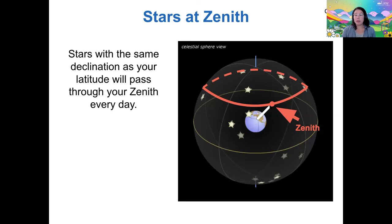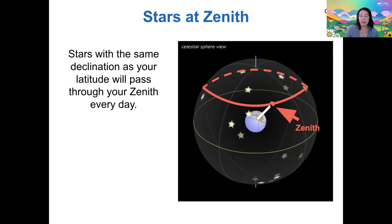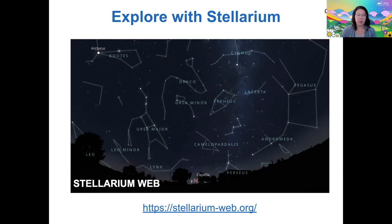That zenith point is really important for orienting us — that's our straight ahead point. This is why it's a little bit hard to understand the celestial sphere at first, because the zenith point is so critical. It's not just the north celestial pole and south celestial pole — that zenith point determines what your sky looks like at your latitude. If you have a star that's the same declination as your latitude, then those stars will pass through your zenith every day, and all the ones closer to the pole will be those circumpolar stars that you'll always see in the sky.